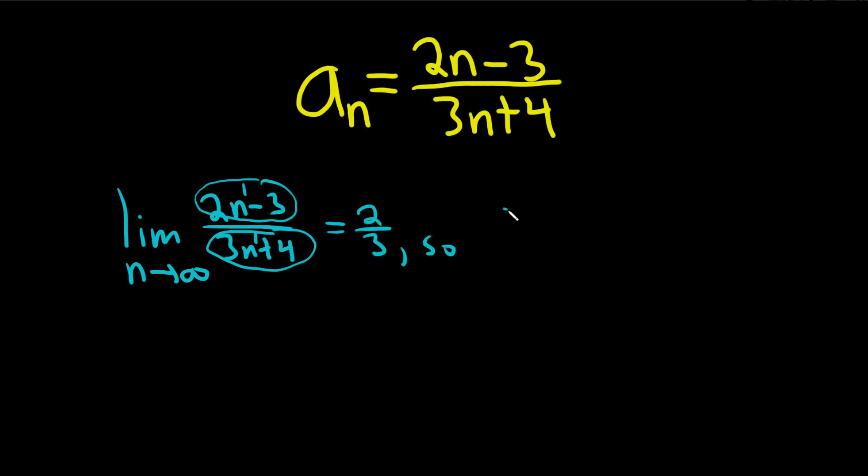So this means that our sequence, a sub n, converges. If you take the limit and you get a number, then that means that the sequence converges. But every converging sequence is bounded. So thus, a sub n is bounded.